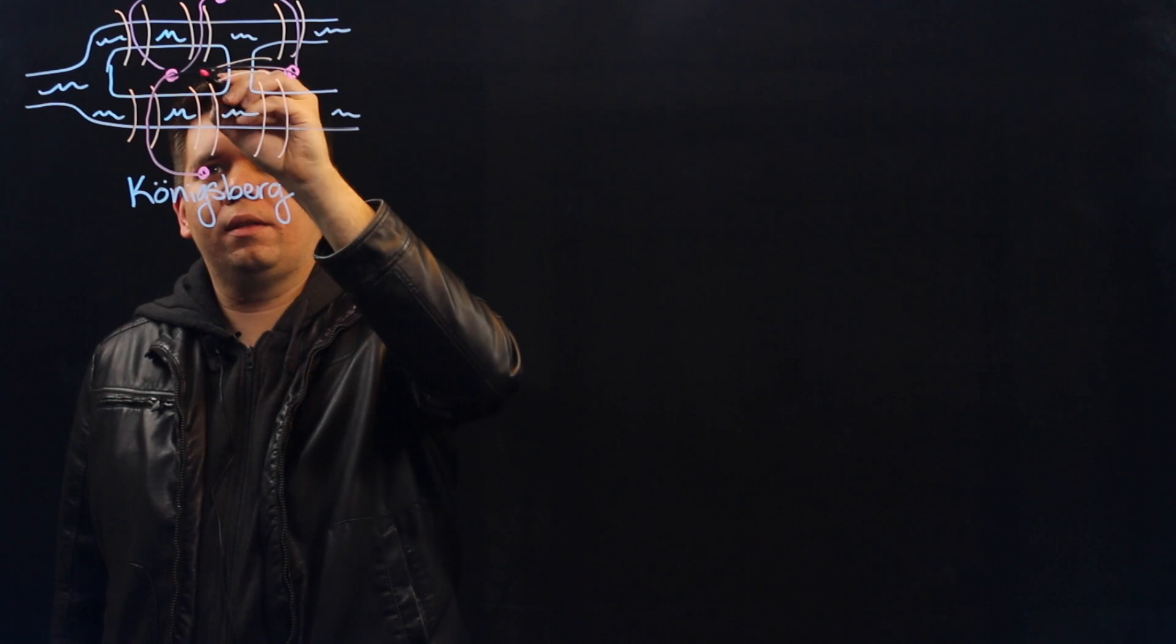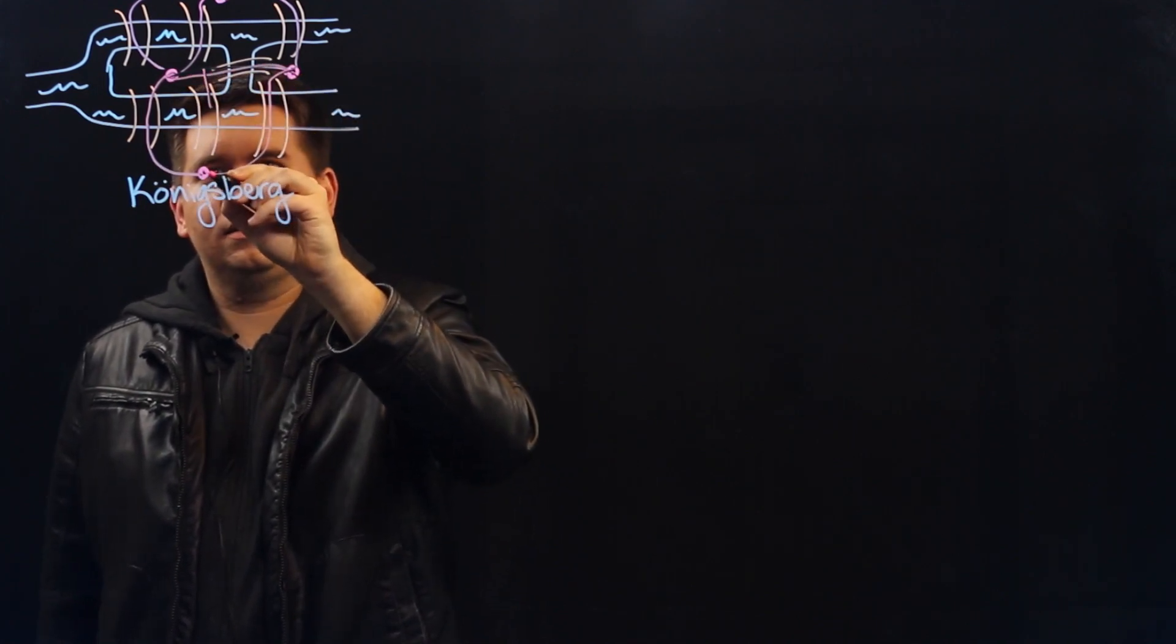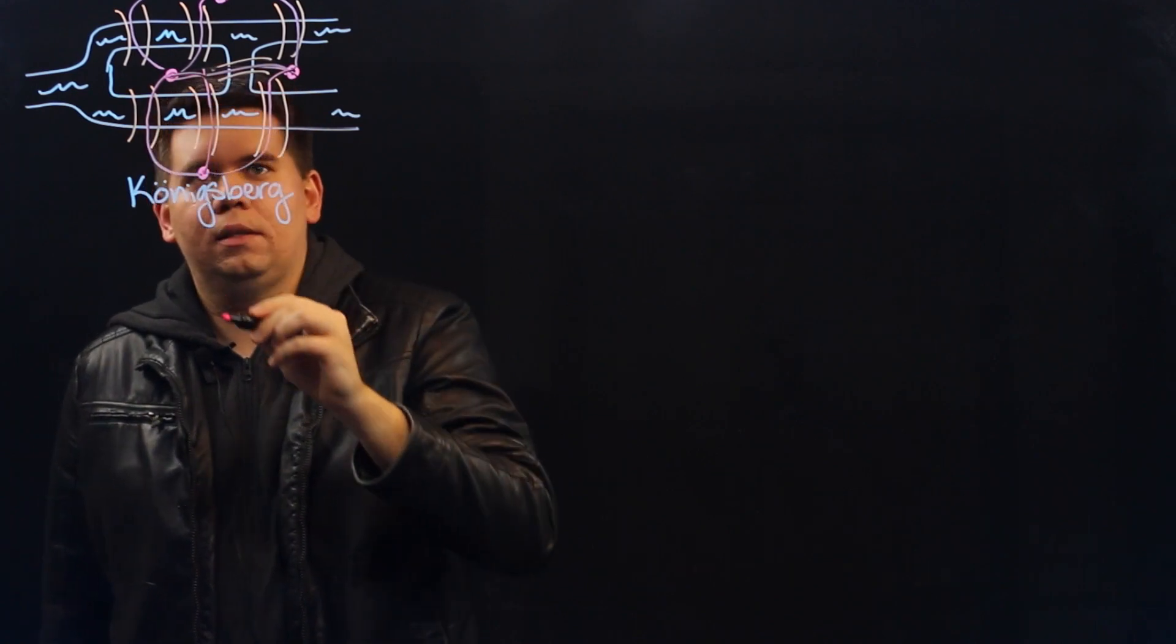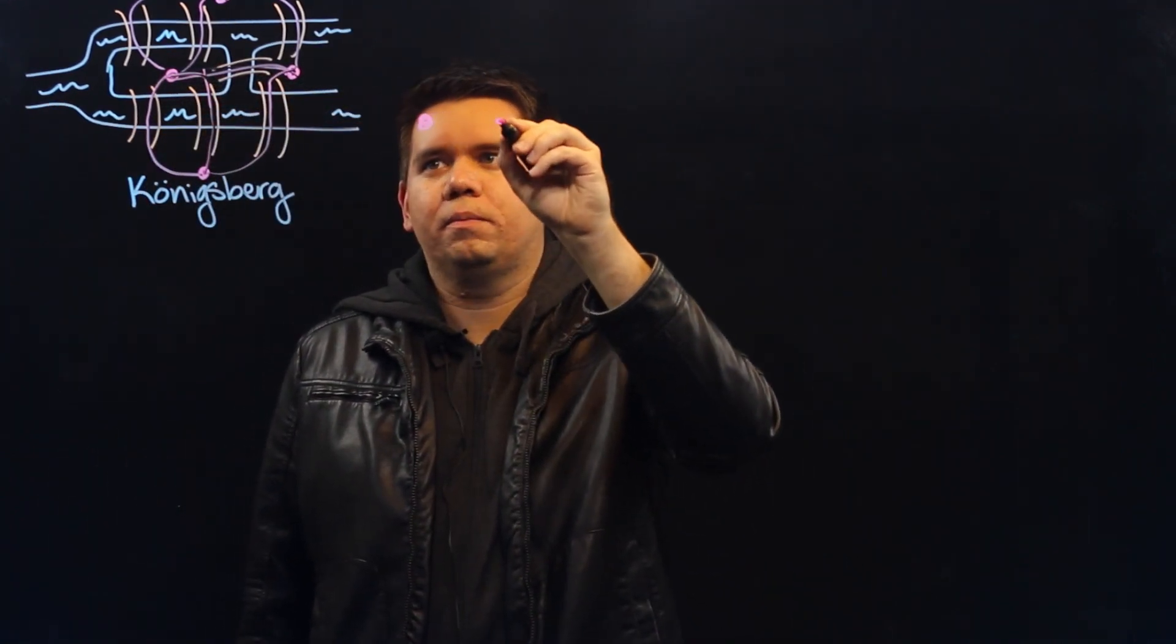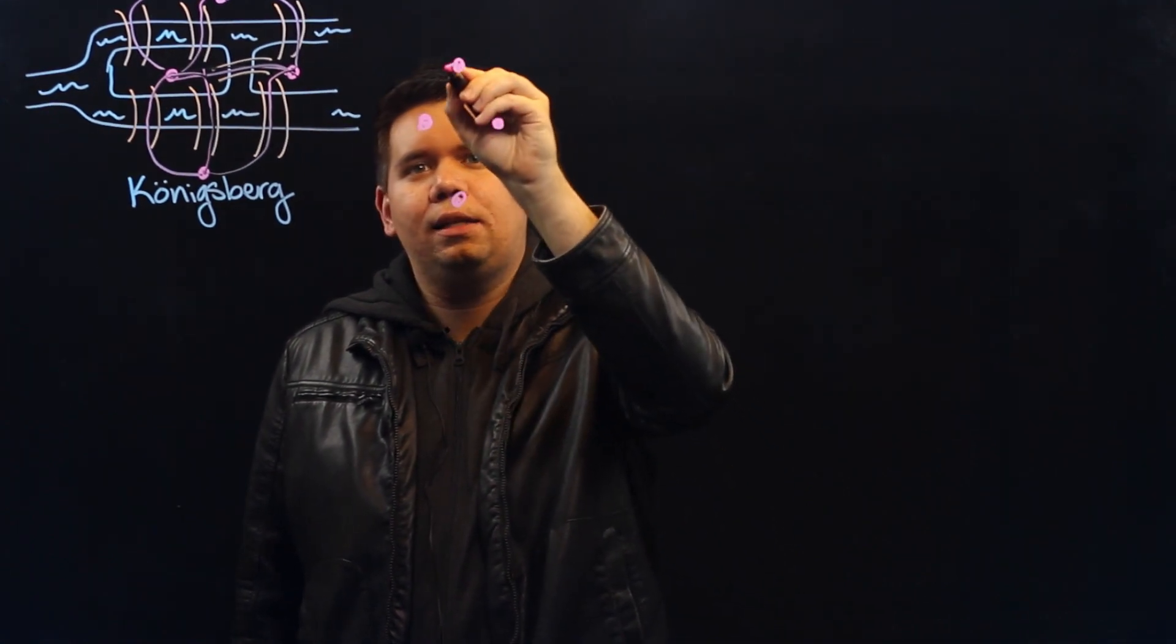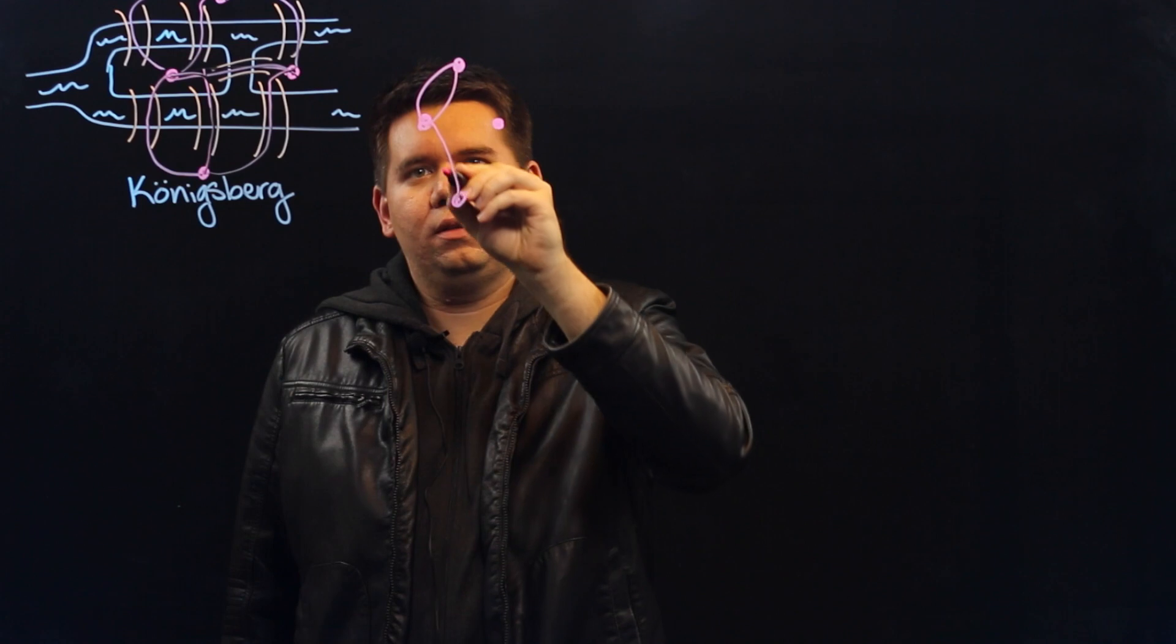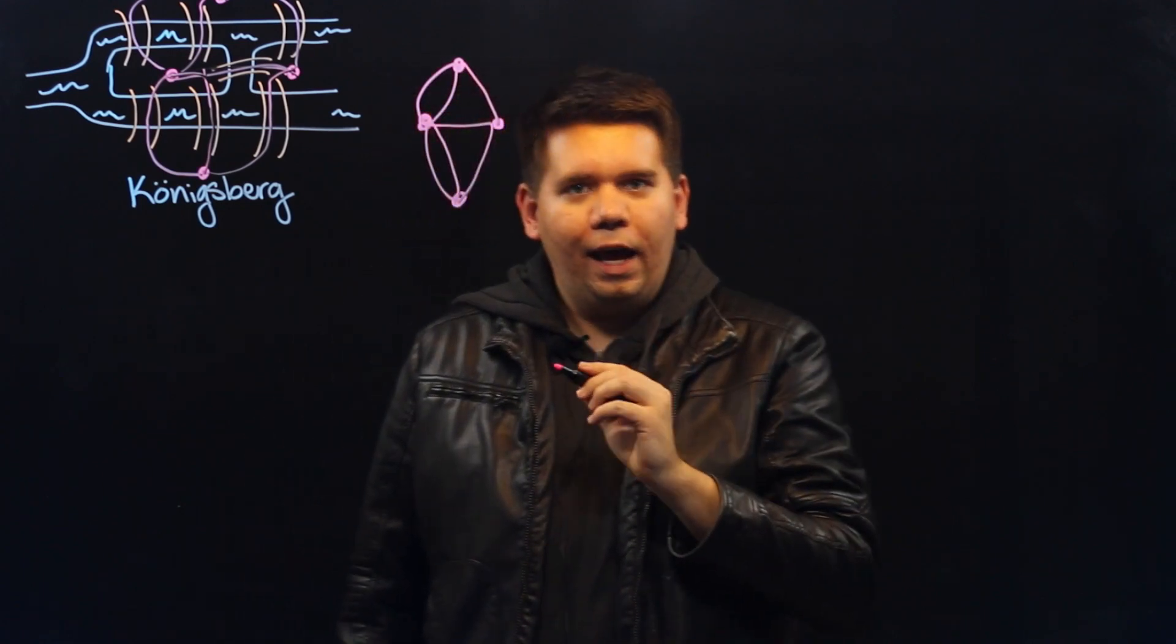And so what we end up with is instead of having landmasses that are connected by bridges, we get a simple abstract picture of four vertices that are connected by seven edges.